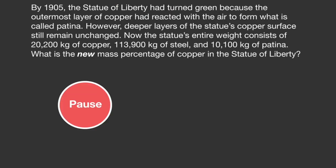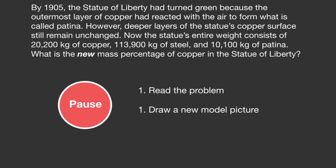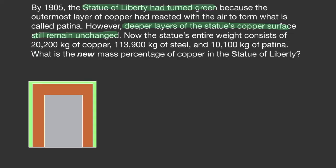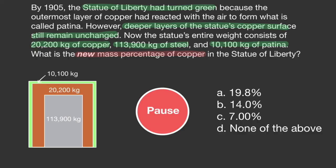One last problem. Pause the video, read the problem, and then draw a new model picture. The first part tells us the Statue of Liberty now has a green screen layer — patina. The second part tells us that even though the outside has changed, some copper on the inside is still the same. Let's draw a thin layer of patina on the outside of the statue. The composition has changed: we now have 20,200 kilograms of pure copper, 113,900 kilograms of steel, and 10,100 kilograms of patina. What is the new mass percentage of copper?